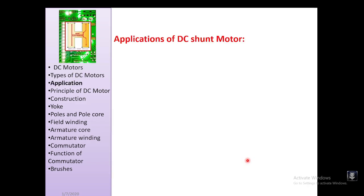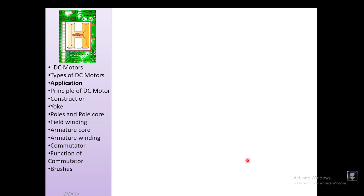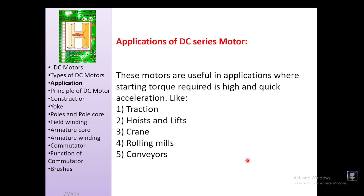DC shunt motors provide constant speed, so they are used in applications requiring constant output speed, such as lathe machines, drilling machines, grinders, mixers, blowers, and compressors.